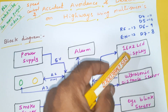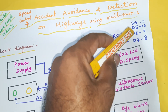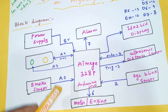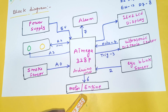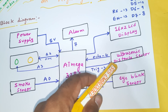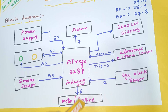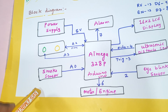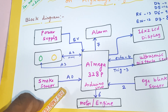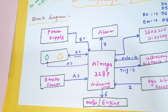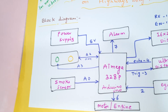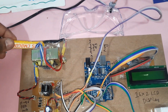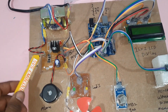We have a 16x2 LCD display connected to pins RS, Enable, D4, D5, D6, D7 on pins 8, 9, 10, 11, 12, 13. The alarm is on pin 7, engine on pin 6. The ultrasonic sensor is connected to trigger and echo on pins 3 and 4. The eye blink sensor is on pin 2, smoke sensor on A0, and red, green, and orange LEDs on A2 and A3.